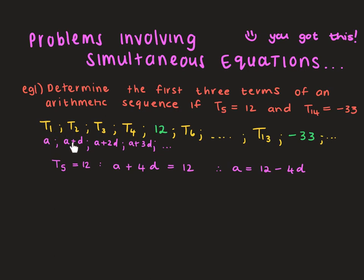Term 2 is A plus a constant difference, term 3 is A plus 2 constant differences. You'll notice that the coefficient of D, the constant difference, is always one less than the position of the term. So term 3 is A plus 2D, term 5 was A plus 4D. So term 14, which they said was negative 33 — the coefficient of D must be one less than 14 — so A plus 13D equals negative 33.